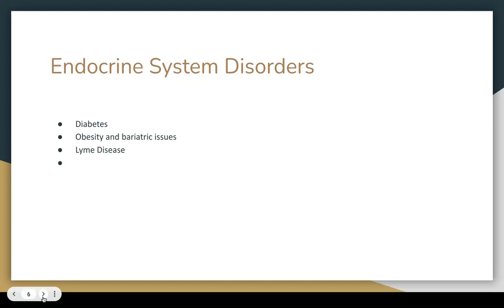We need to understand what to look for and how to manage it — quickly getting the client into a safe position, calling the nurse to get a finger stick, or if in the home, doing a blood sugar check. If it goes uncontrolled, the client could fall into an unconscious or coma state. We also need to understand ketoacidosis — signs include dehydration, an acetone smell to the breath, and rapid or weak pulse. We want to make sure they receive medical treatment immediately if they're having some sort of crisis.